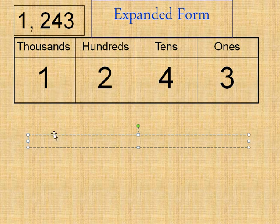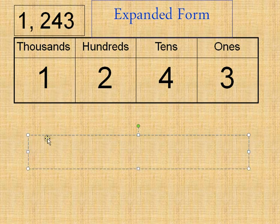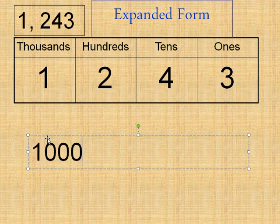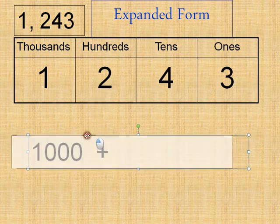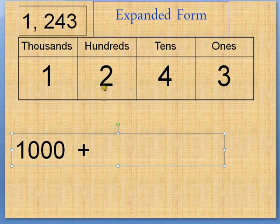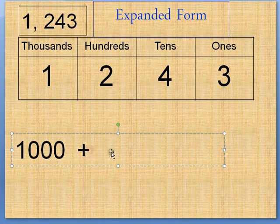Now, if I have one group of a thousand, one thousand is one thousand. In numbers in my thousands place, I have to have three zeros at the end of them. My hundreds, move this over a little bit. If I have two groups of 100, that is 200.